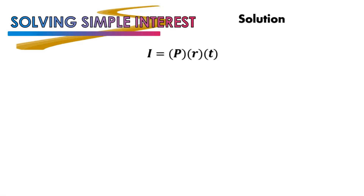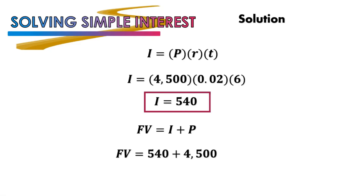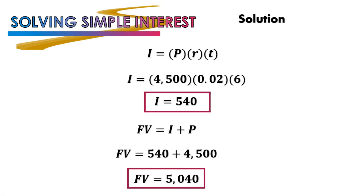For the solution, start by finding I using the formula I = PRT. Substituting: I = 4500 × 0.02 × 6. Using a calculator, we get I = 540. Now we use this to find FV: FV = I + P = 540 + 4500 = 5,040. Therefore, Mrs. Aquino will pay P5,040 after 6 months.